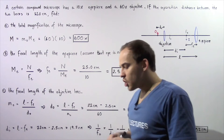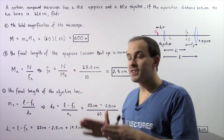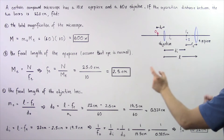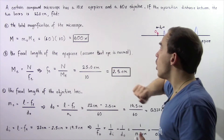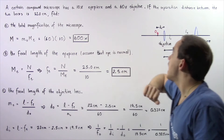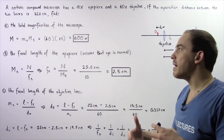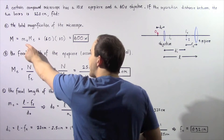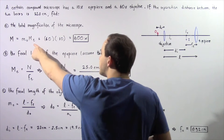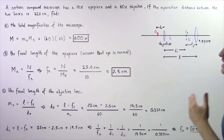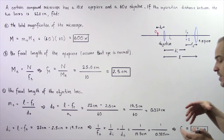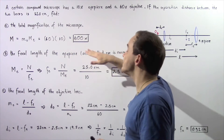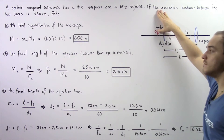To find the total magnification of the two-lens system, we simply multiply the magnification of each individual lens. The eyepiece is ×10 and the objective is ×60, so the total magnification is 60 multiplied by 10, giving us 600×. This means the final image our eye observes is 600 times the size of the original object.